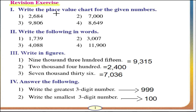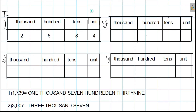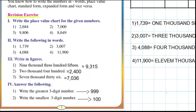First main: write the place value chart for the given numbers. For example, the first question is 2684. Here we have four units, eight tens, six hundreds, and two thousands. This is the place value for 2684.